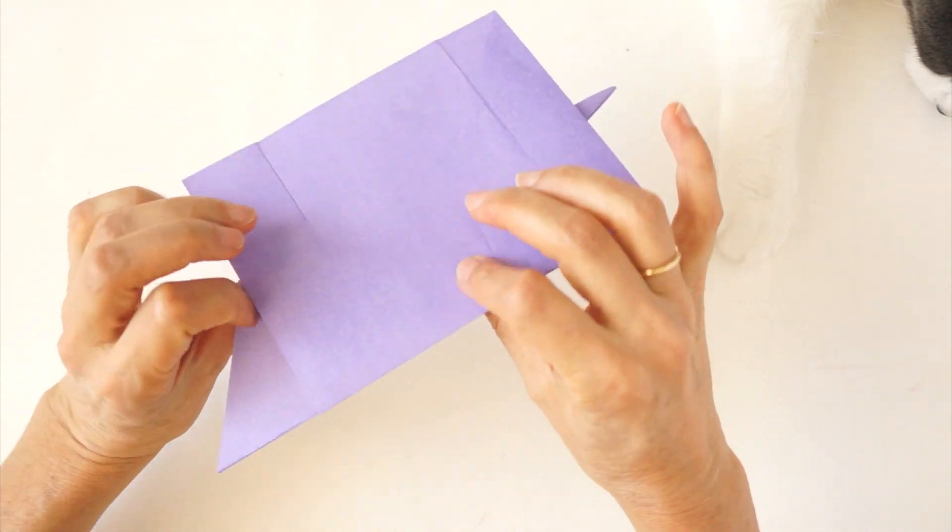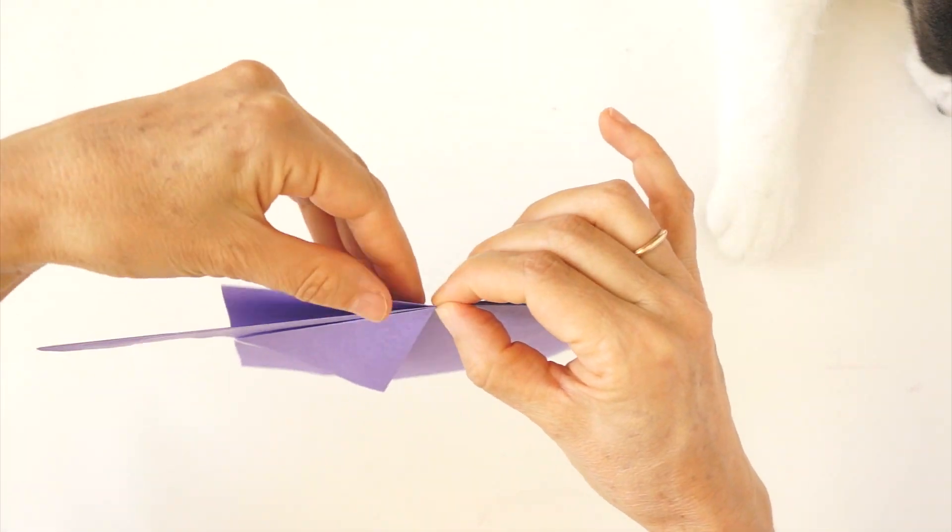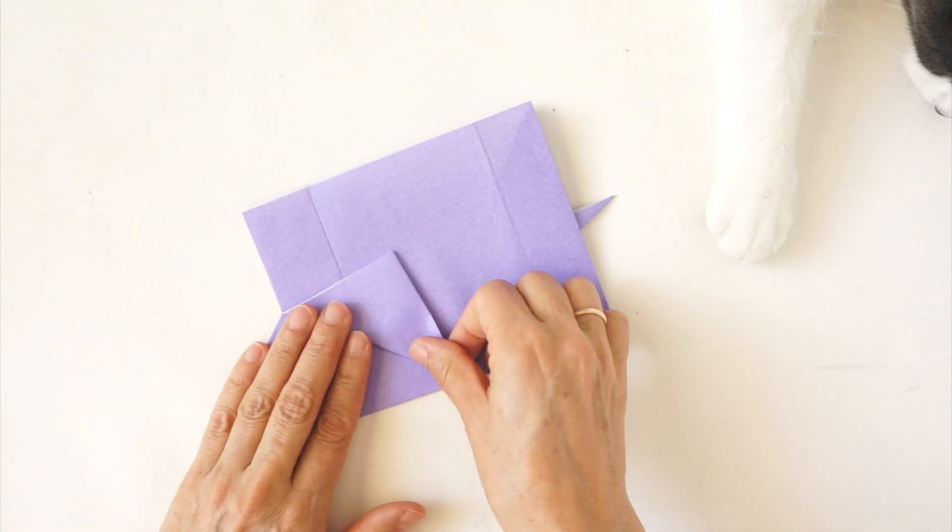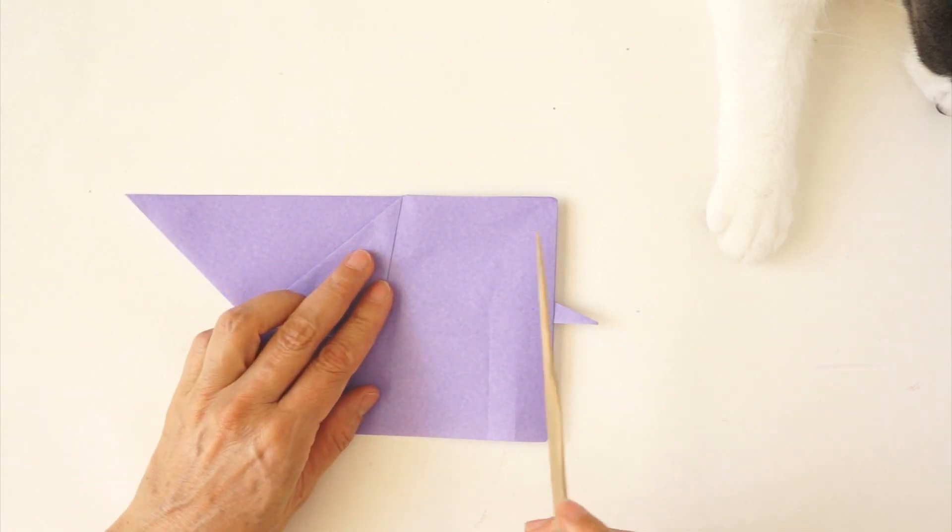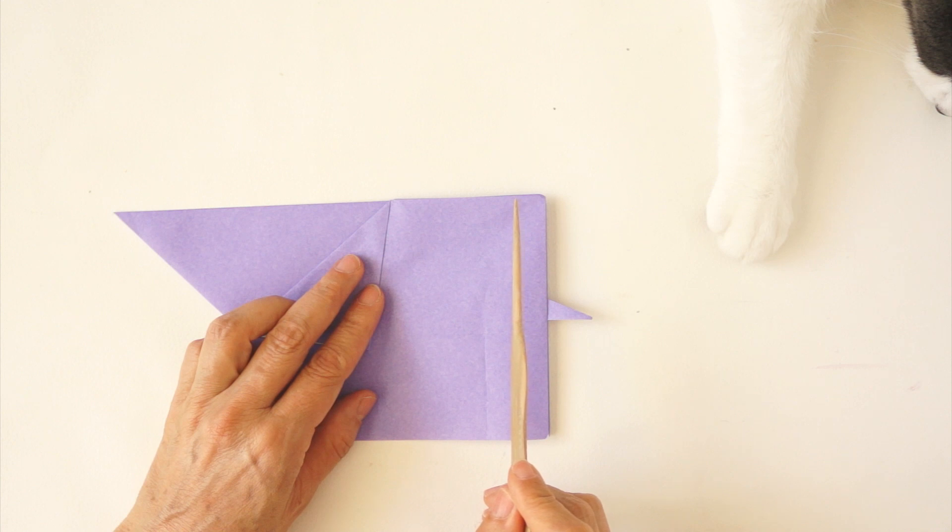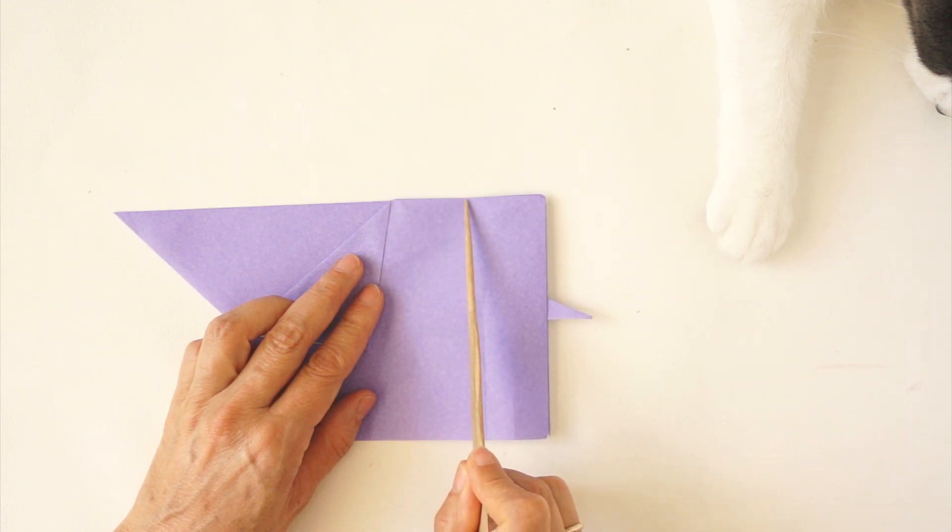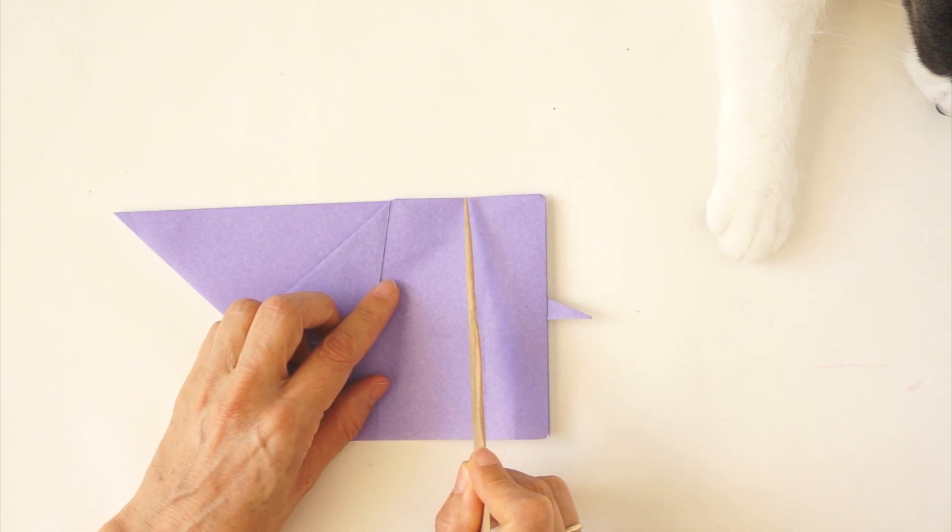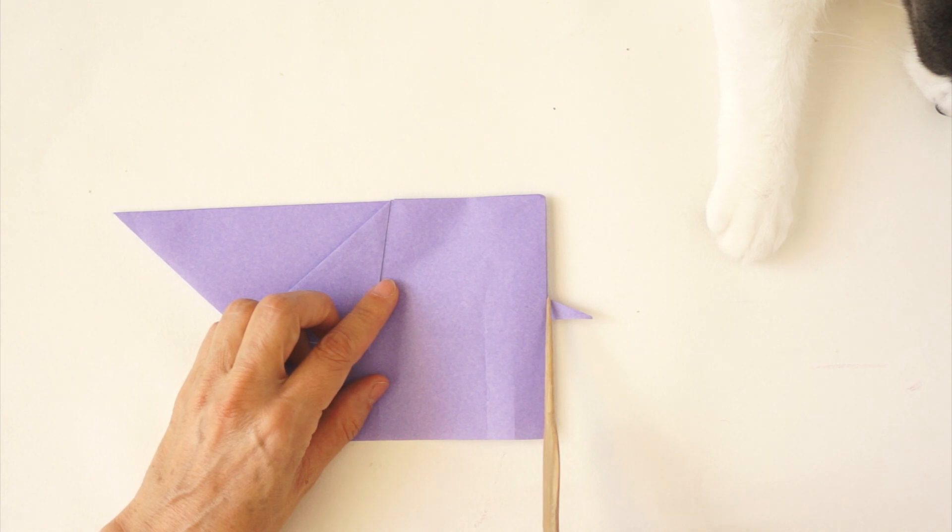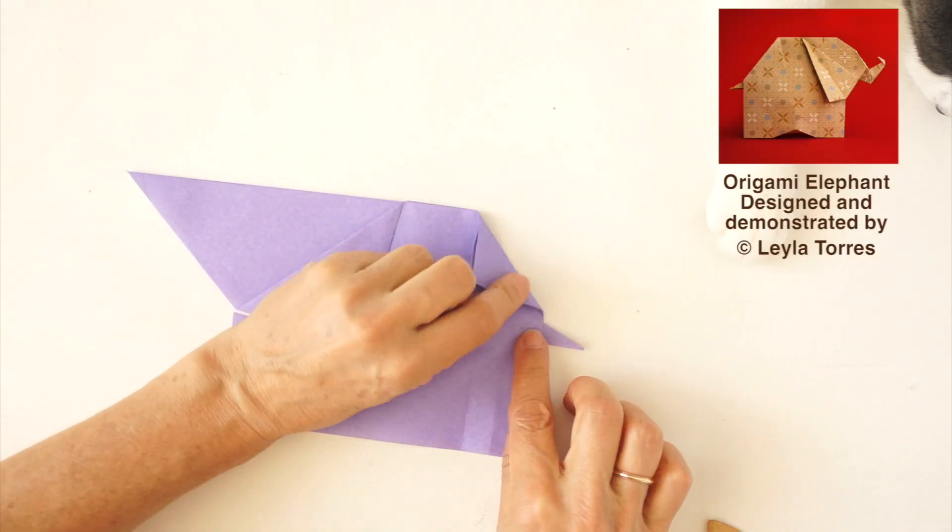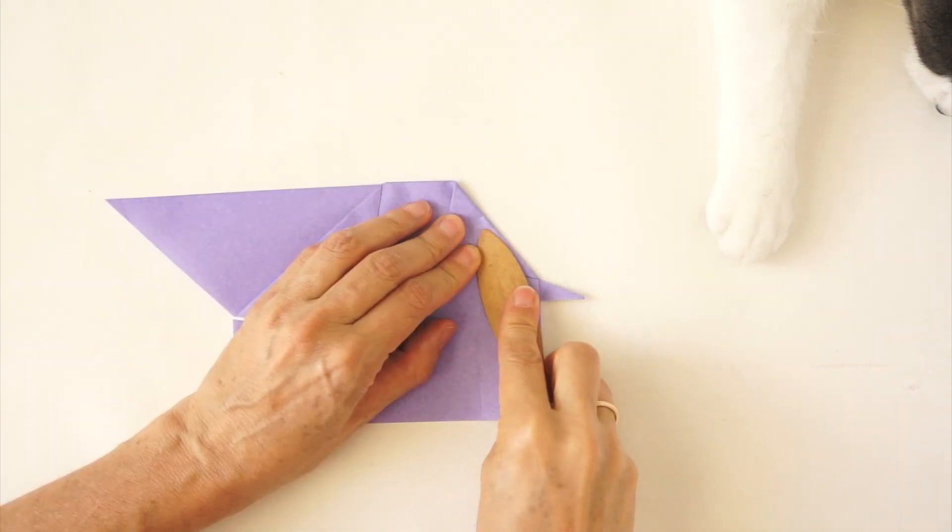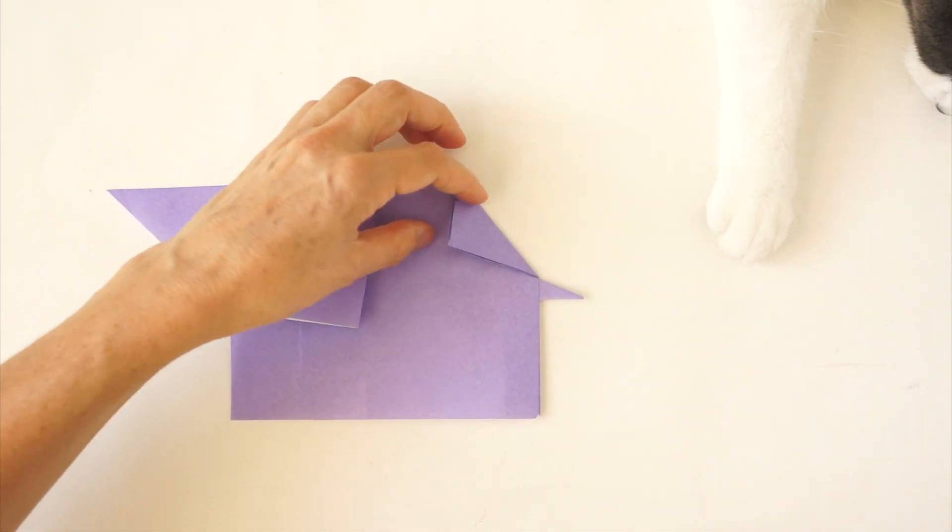Repeat on the back. Now we visually locate the halfway point between this corner and this corner. About here. We begin a fold right there and end at this corner, right above the tail. To the front and also goes to the back.